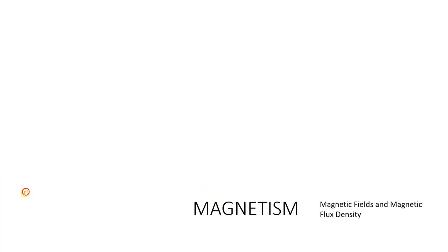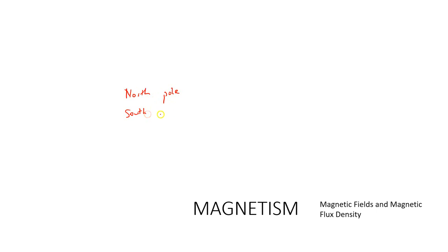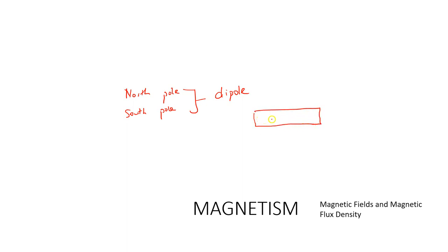By now we have an idea that a magnet has two poles — it has a north pole and a south pole. Because magnets have two poles, we generally refer to magnets as being dipoles. We're going to consider what we call a bar magnet, where one side is north and one side is south.